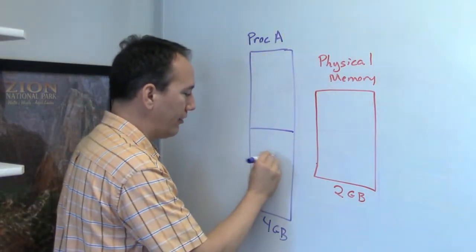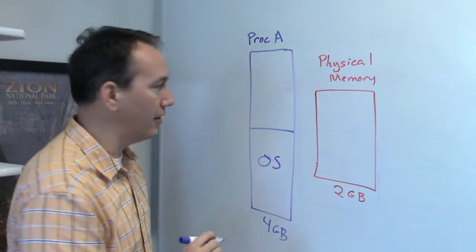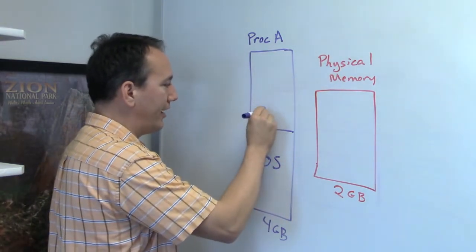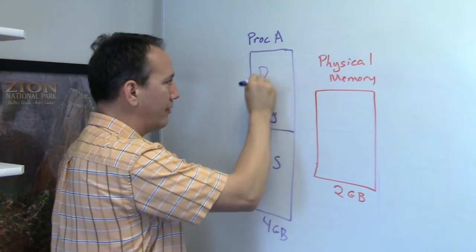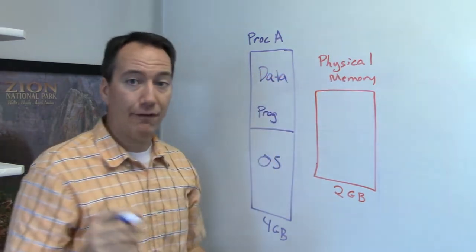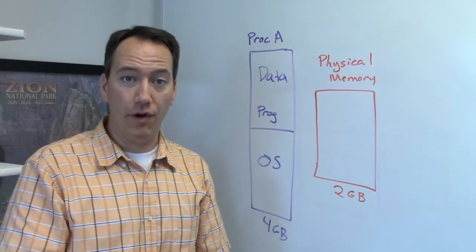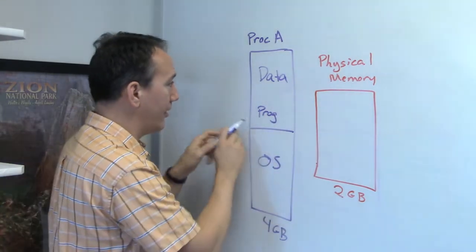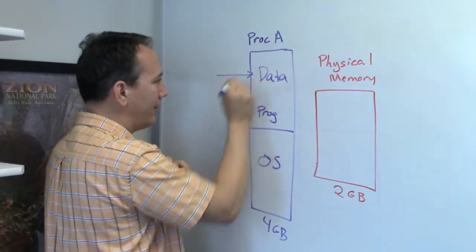Now remember, like I showed you previously, the OS is sitting here in the lower half, and then the program is sitting up here in the upper half with all of its data. Now if I do a load or a store hardware instruction in this memory, let's say I go to access this address right here.